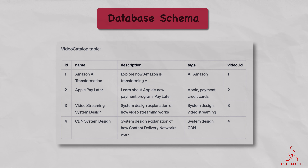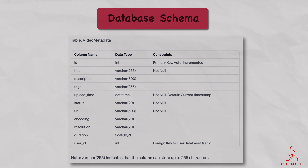On the other hand, the video metadata database contains all the information related to the video content, such as the video file location, encoding parameters, resolution, bitrate, and other technical details. This database also keeps track of various versions and renditions of the video available for streaming. The purpose of the video metadata database is to provide a centralized repository of all the video-related information that can be accessed by different microservices in the system.